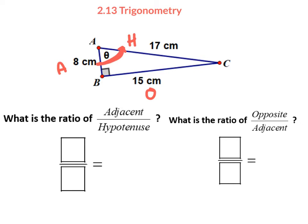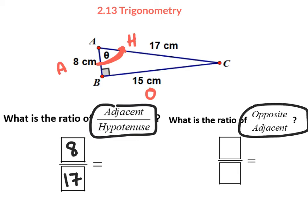If we were doing adjacent to hypotenuse, the adjacent would be 8 and the hypotenuse would be 17. And if we were doing opposite to adjacent, it would be 8 to 15. We're getting you ready by setting up ratios, and soon that's going to connect to angle size as well.